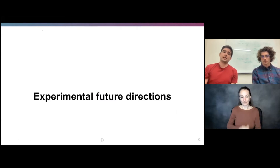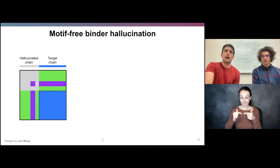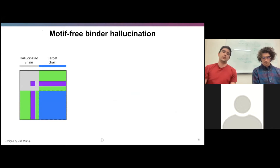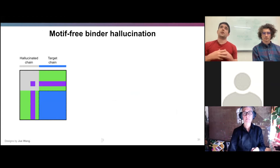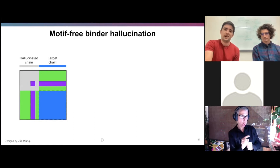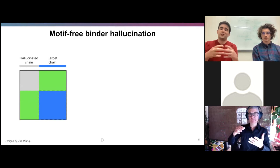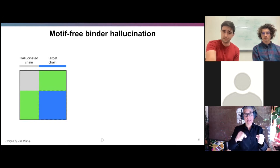Just to briefly touch on future directions: the first is an extension of trying to enhance or extend a binding interface starting from a small known stub. The logical question is how small a stub can you get away with, and whether you can shrink away the stub entirely and still successfully hallucinate a binding interface.